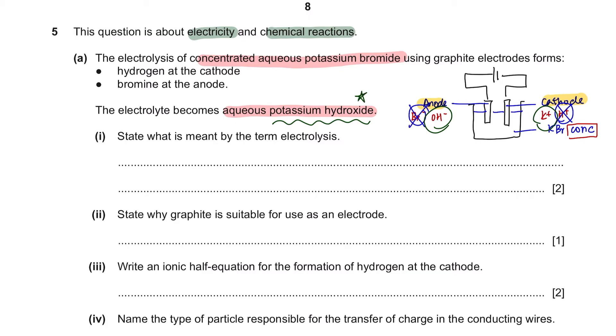Part 1. State what is meant by the term electrolysis. Electrolysis is the breaking down of an ionic compound in molten or aqueous solution by electricity. Make sure you have these four keywords in your answer to obtain a complete two marks.